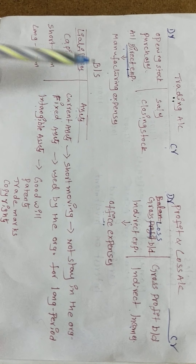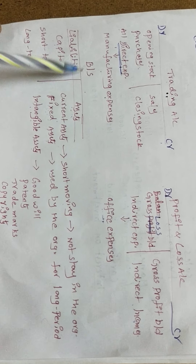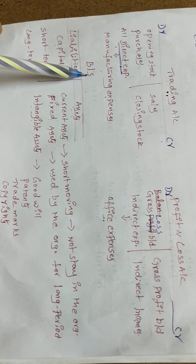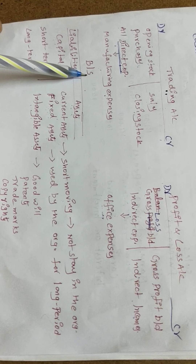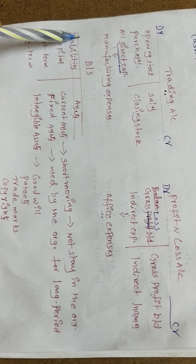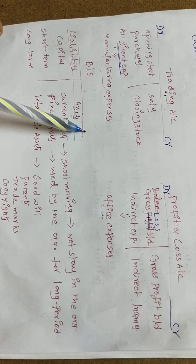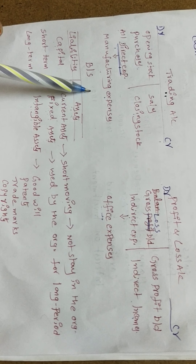The third component in final accounts is the balance sheet. The balance sheet is not an account — it is a statement. So we should not write DR and CR on the sides.